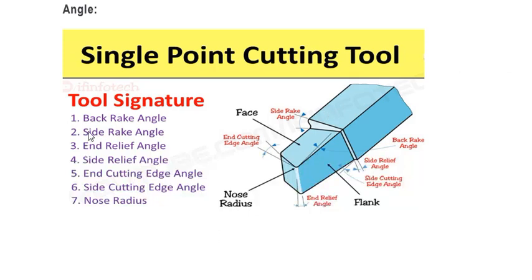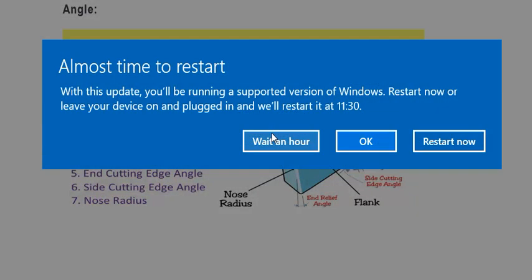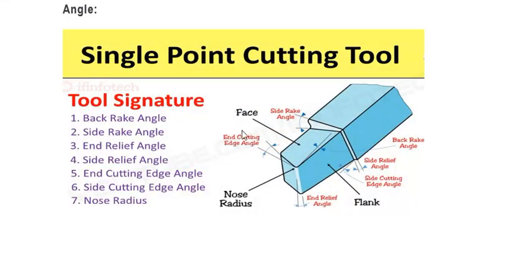Now we will start with the back rake angle and side rake angle. The face of this tool comes directly in contact with the chip removed from the workpiece. This face is known as the rake face. The angle made with respect to this face is the rake angle.